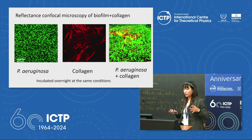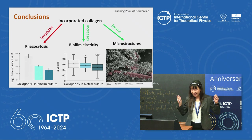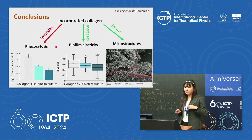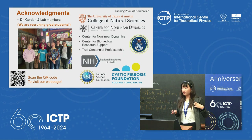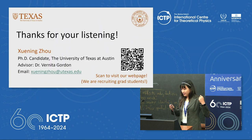In the future I want to explore how this network forms in biofilms and how they use collagen molecules to form layer-like structures or fibers, using biochemical methods to figure out polymer interactions. The take-home points are: collagen can be incorporated by biofilms; incorporated collagen impedes phagocytosis, increases biofilm elasticity, and forms microstructures; and enzymatic breakdown of collagen promotes phagocytosis, lowers elasticity, and destroys the microstructures.